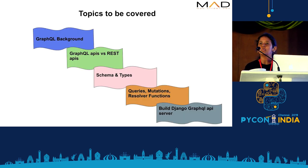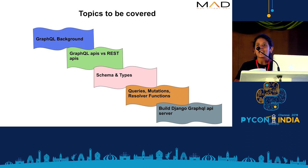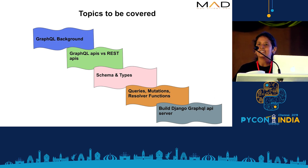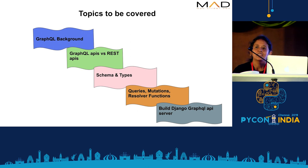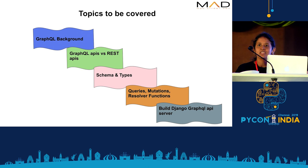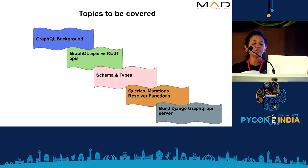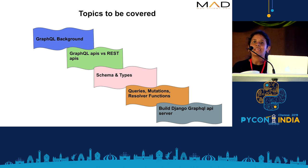I'll take you through the topics we are going to cover over the next half hour. We're going to look at the Graph Query Language background — why and how it came into existence — and compare it with REST APIs. We'll look at the basic building blocks: the schema, the types, the queries, mutations, and the resolver functions. Then we'll take up a simple use case, build a Django GraphQL API server for it, and try out some queries and mutations using the GraphQL IDE.